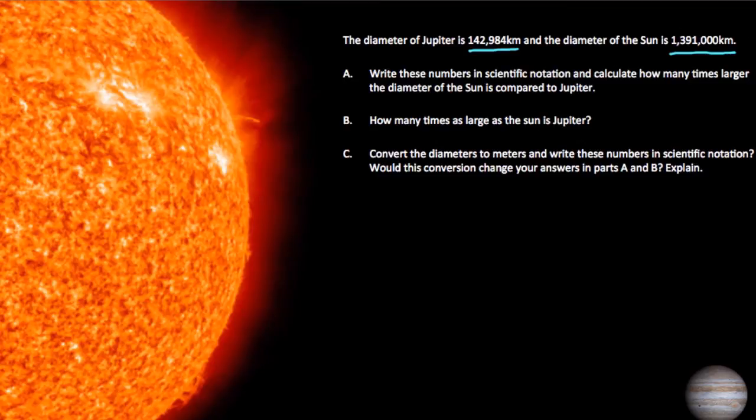Well, the first thing I want to do is convert to scientific notation. So for Jupiter, we have 142,984 kilometers. And we want to write this in scientific notation, so that it's some number, some factor, sometimes called a coefficient, that's between 1 and 10.